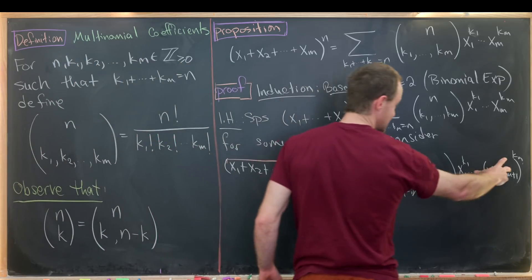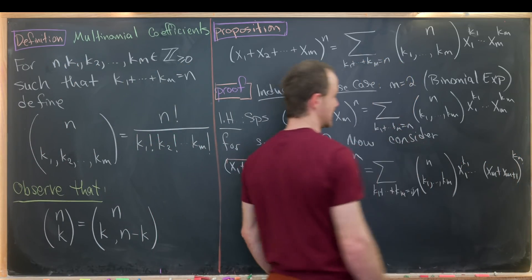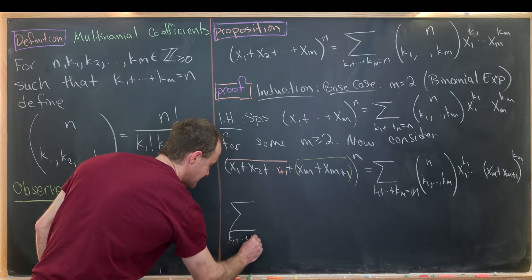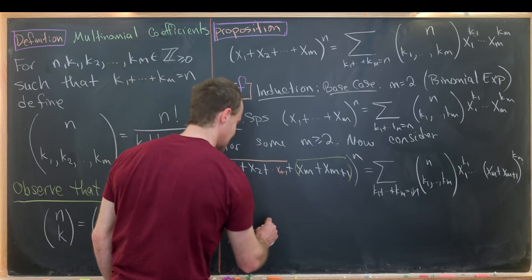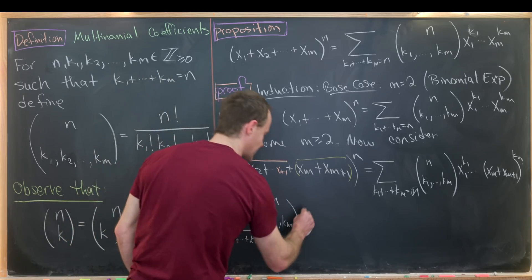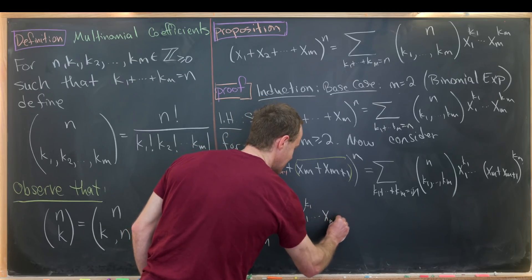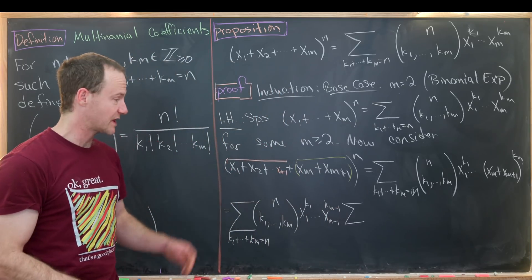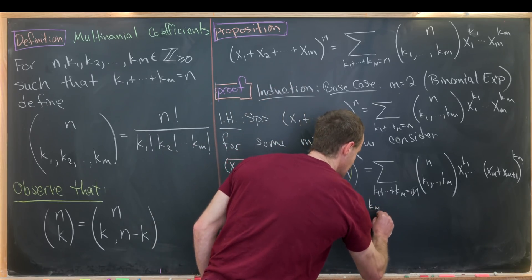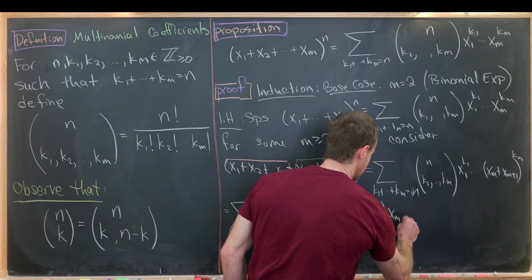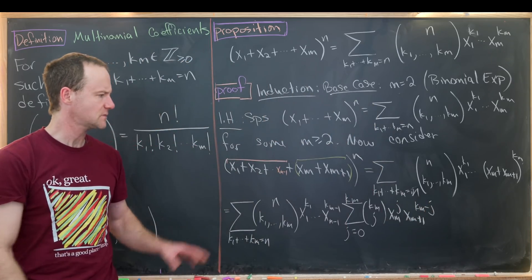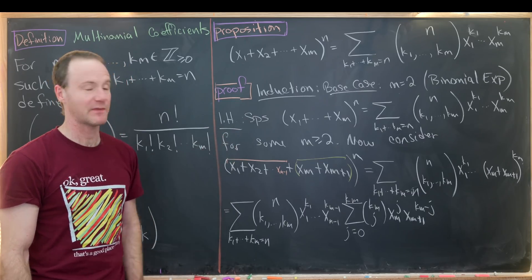Now we can apply the base case — the binomial theorem — right here. That's going to allow us to write this as the sum as k1 plus up to km equals n, of our multinomial coefficient n choose k1 up to km, then x1 to the k1 through xm−1 to the km−1, times the sum as j goes from 0 to km, of km choose j, times xm to the j, times xm+1 to the km minus j.